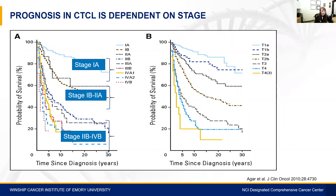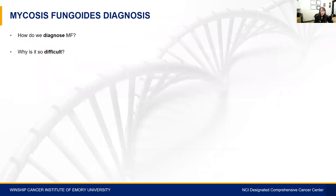The prognosis in CTCL is highly dependent on stage. For patients with early stage disease, especially those with stage 1A, the prognosis is really excellent and measured in decades. By contrast, patients with advanced stage disease have a poor prognosis, with a median survival of five years or less.